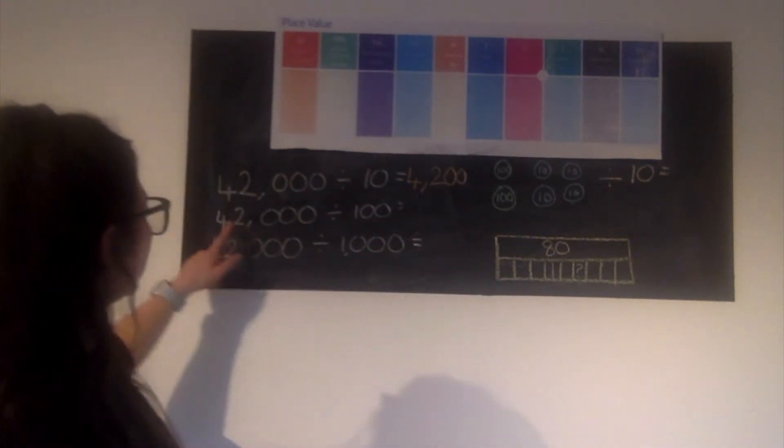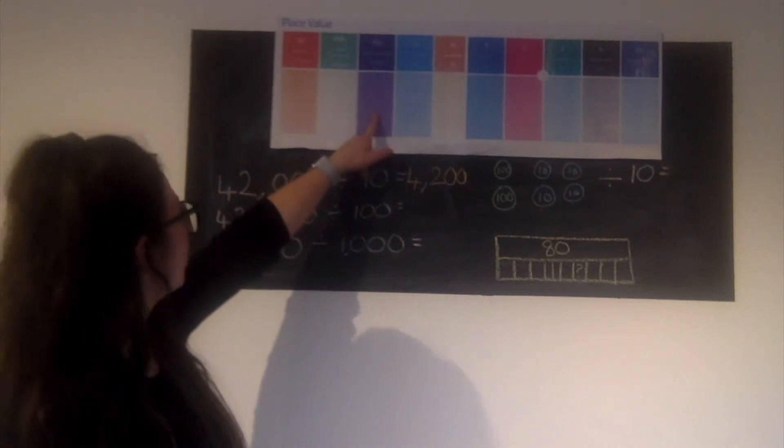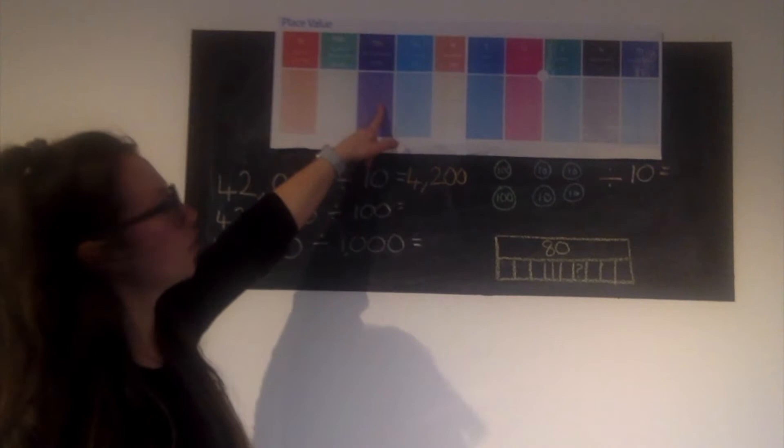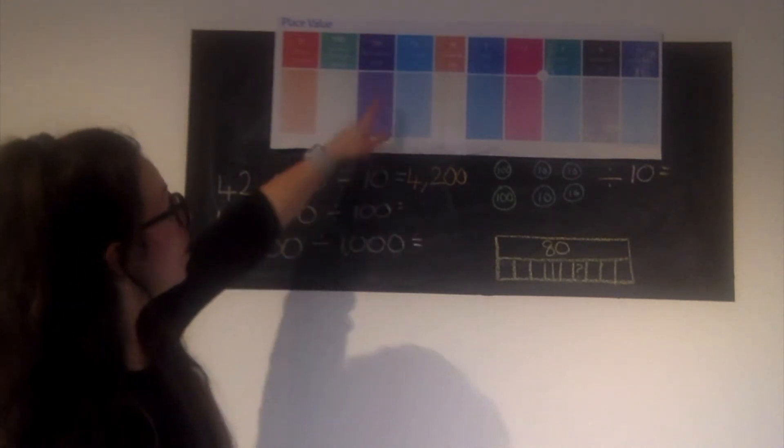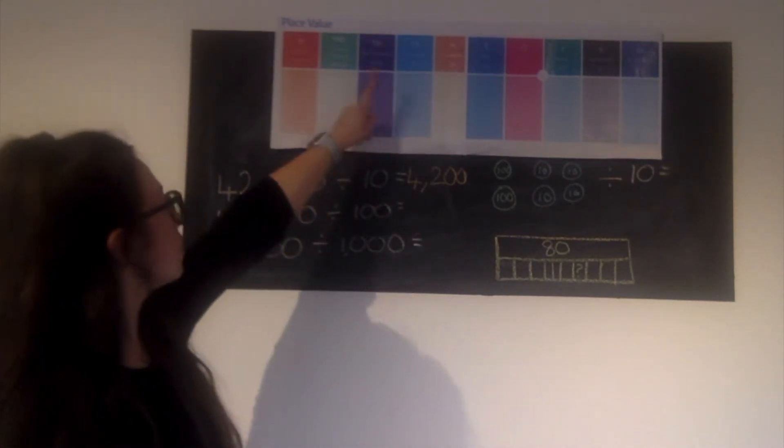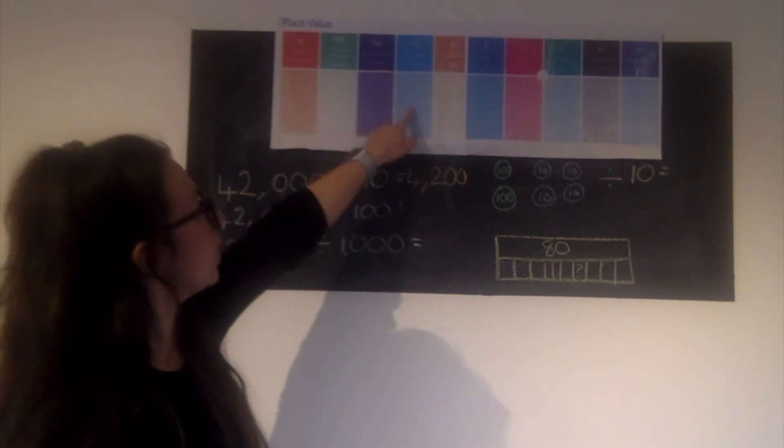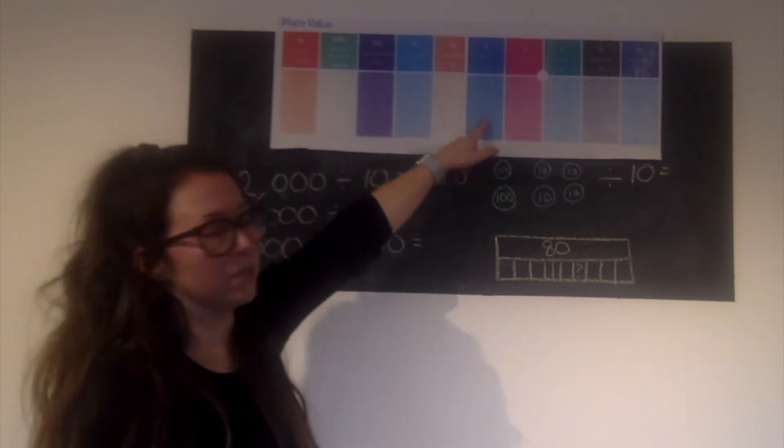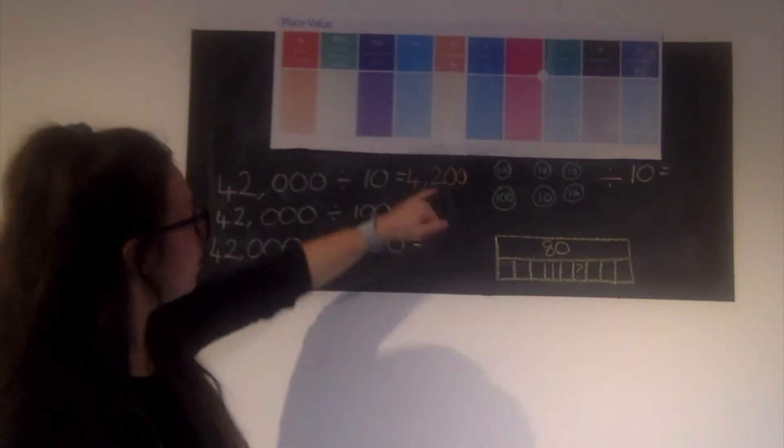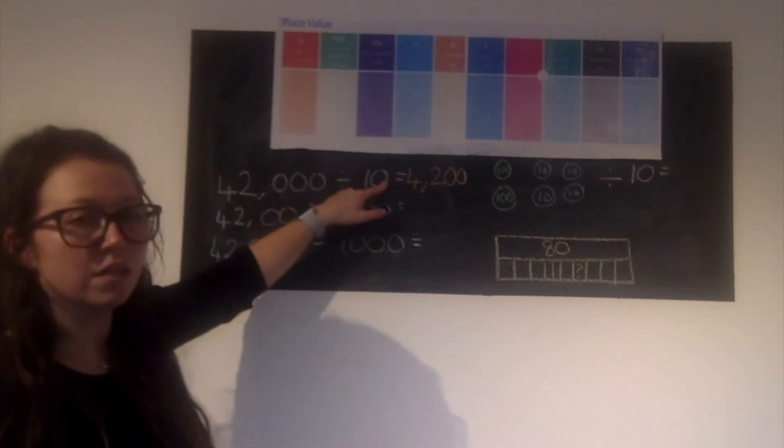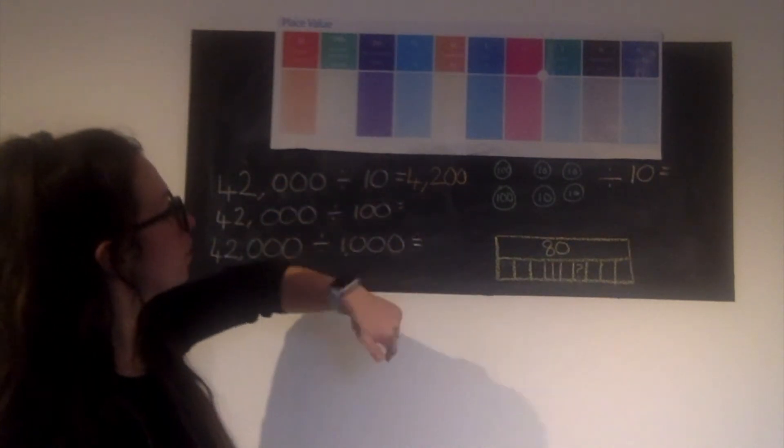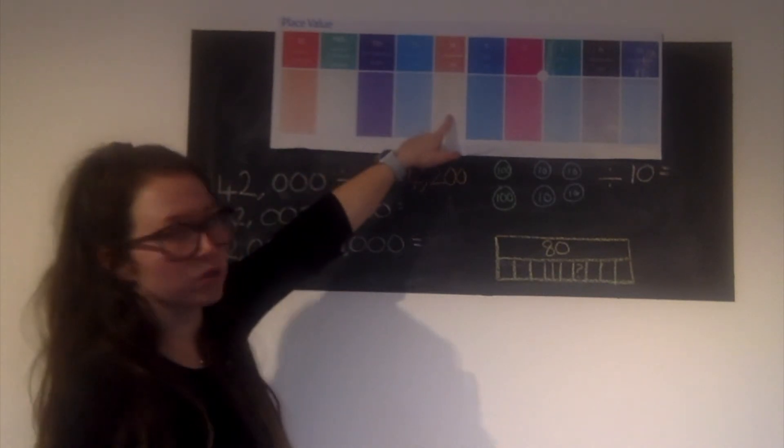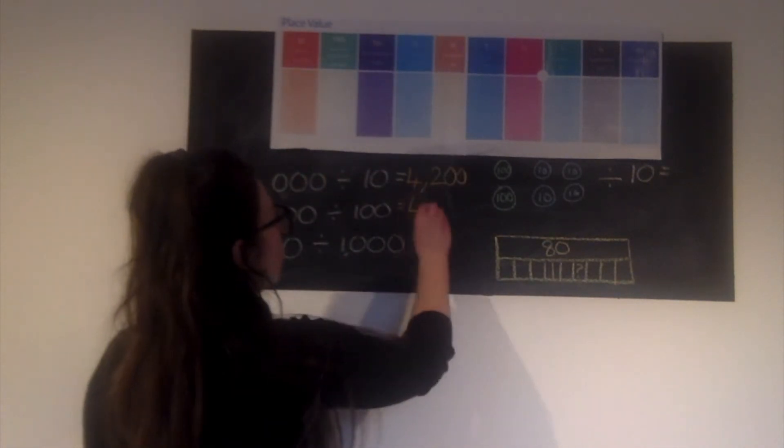Now my next one, 42,000 - I'm starting with the same number, 4 ten thousands, 2 thousands. This time I'm dividing it by 100, so I've got two choices. I can either move it two places to the right, so my 40,000 turns to 4,000 then to 400, and the same for my 2,000s goes from 200s to 2 tens. Or we can think about: well, I've already divided my number by 10, so I just need to make it 10 times smaller again. So starting after my thousands, 4,000s turns into 400s. So our answer should be 420.